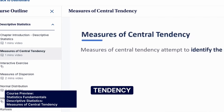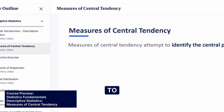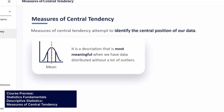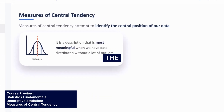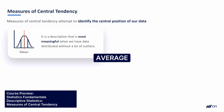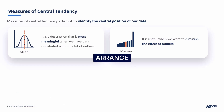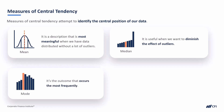Measures of central tendency attempt to identify the central position of our data. There is the mean, which tells us the average of our data. Median, which tells us the middle number if we arrange our data from the smallest value to the largest. And mode, which describes the most frequently occurring number.